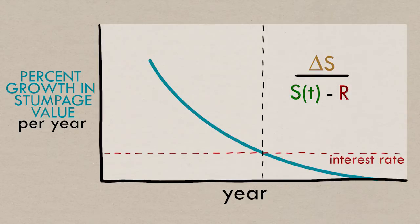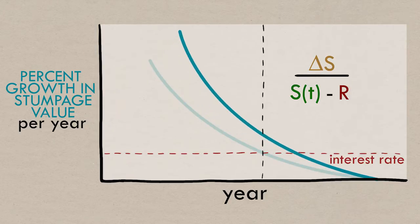Since we're subtracting a number, it's always going to make this bottom here smaller. And so dividing by a smaller number, it's always going to make this whole term bigger. On the graph, the line is going to be pushed up and to the right.